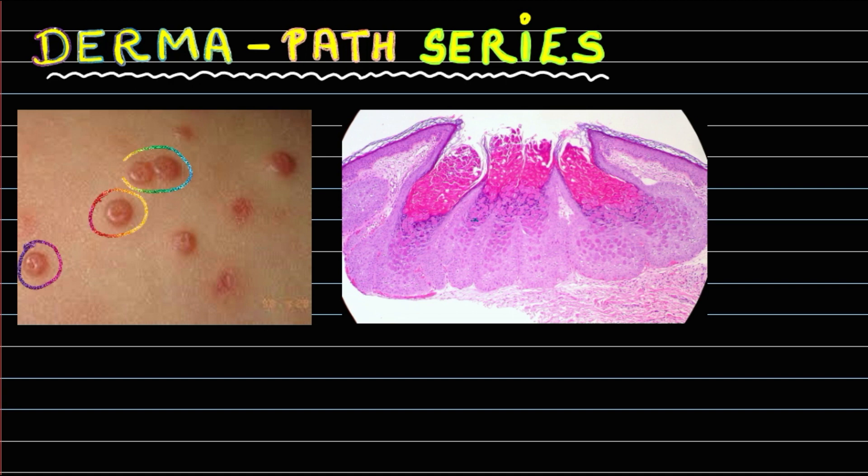The image shows characteristic lesions present over the trunk area of the patient. These are umbilicated papules.